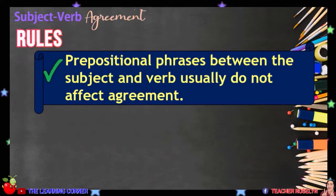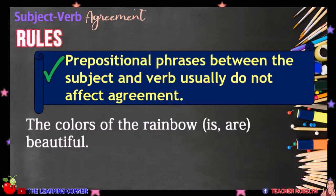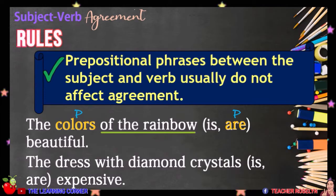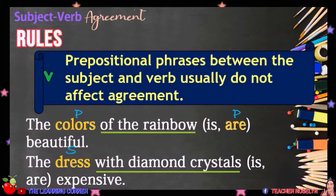Prepositional phrases between the subject and verb usually do not affect agreement. In this sentence, our subject is COLORS, which is a plural noun. The prepositional phrase 'of the rainbow' will not affect the subject. The correct verb to be used is ARE. The colors of the rainbow are beautiful. Another example: in this sentence, the subject is DRESS, which is a singular noun. The prepositional phrase 'with diamond crystals' will not affect the subject, so the verb that we will use is IS.